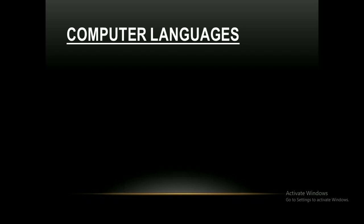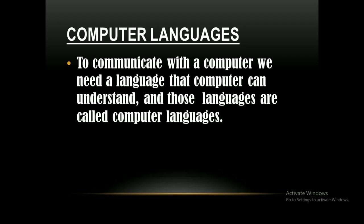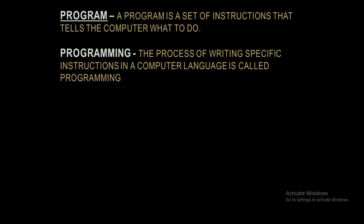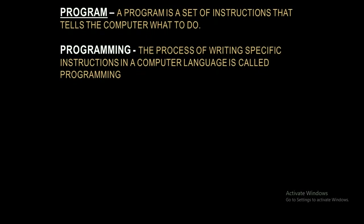Now we are going to discuss computer languages. A computer understands only machine language. Hence, a program written in any other computer language has to be converted into machine language first. The software used to translate a high-level language program into machine language is called a language processor or language translator. A program is a set of instructions that tells the computer what to do. The process of writing specific instructions in a computer language is called programming.